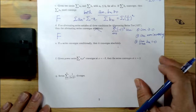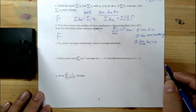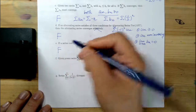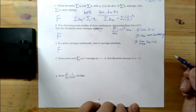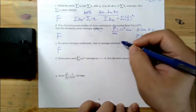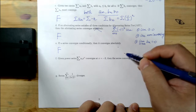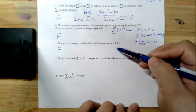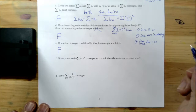Part E: if a series converges conditionally, then it converges absolutely. This is false. If a series converges conditionally, it cannot converge absolutely. Conditional convergence and absolute convergence have no intersection — it must be one or the other; it cannot be both.